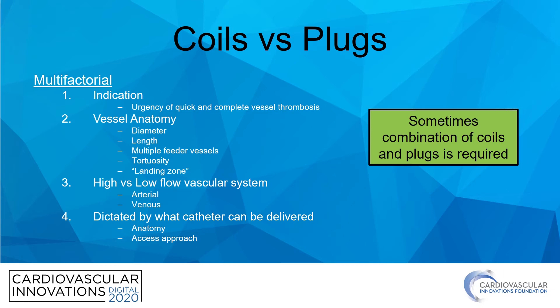High versus low flow systems should also factor into your decision. For some complex vascular structures, what embolization devices are chosen will be entirely dictated by what catheters can be delivered into the target vessel. Your access site can also affect your ability to deliver sheaths and catheters and should be considered carefully. Remember there will be situations where combinations of plugs and coils are required to achieve adequate cessation of flow.